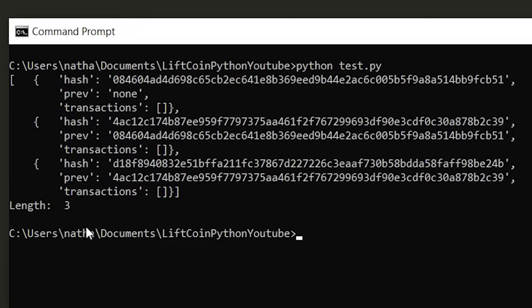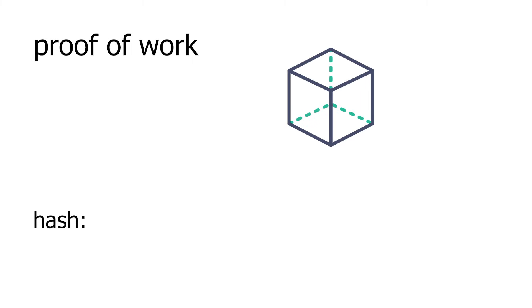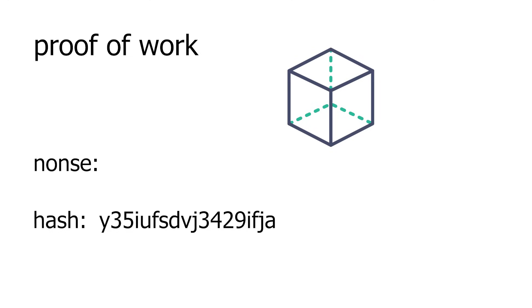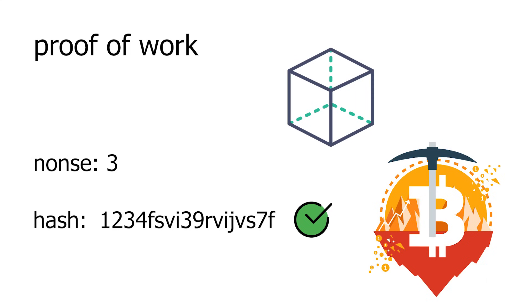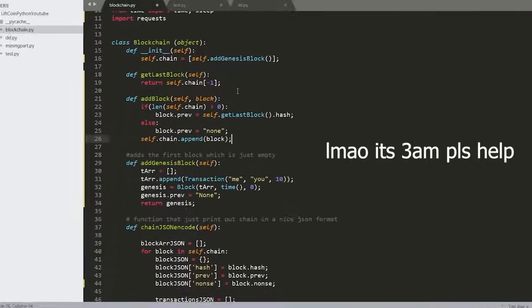Now we're going to have to implement a proof of work algorithm. Remember how the block's hash depends on all the block's other data — we're going to store a value in the block called a nonce, and we're going to brute force a solution for this variable until it makes the hash such that its first four digits are 1234. The process of solving for this nonce is called mining — you've probably heard of Bitcoin mining. For our cryptocurrency we're going to have a list of pending transactions, or transactions that are waiting to be added to the blockchain, and when someone mines a block they're adding a new block with all these transactions onto the blockchain.